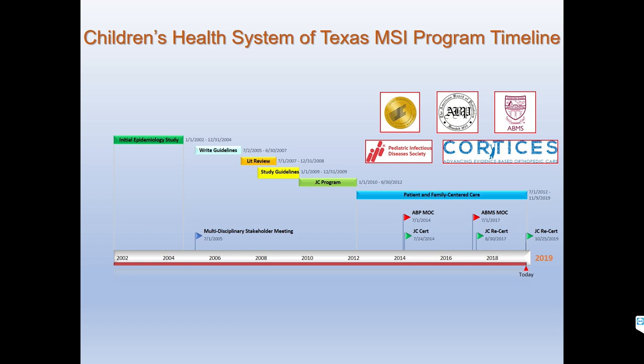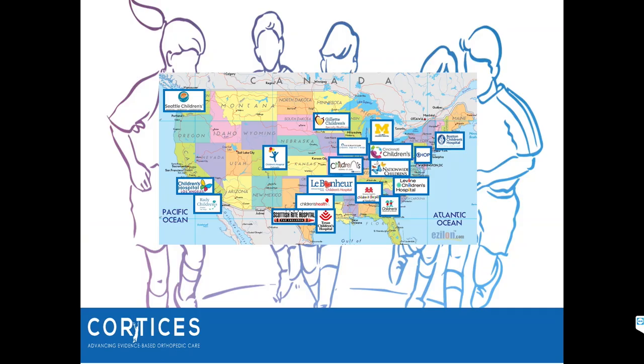Along the way we've been certified three times by the Joint Commission. Providers receive credit for caring for these children through the ABP MOC program, and we expanded to the American Board of Medical Subspecialties. We participate at the national level with the Pediatric Infectious Disease Society and the Infectious Disease Society of America in a national bone and joint infection guideline development process — working on these for seven years, probably published in the next year.